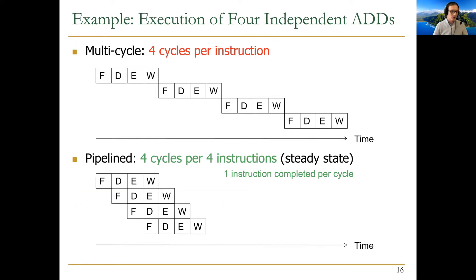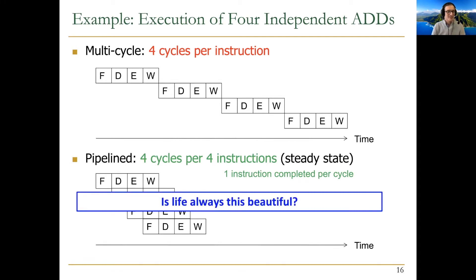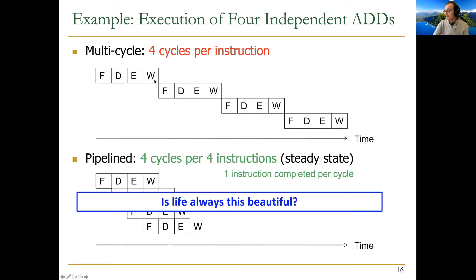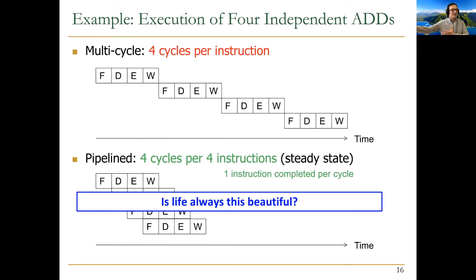The problem is life is not always this nice. You don't always have independent adds. When the second add depends on the result of the first, how do you keep the pipeline full? That's going to cause a lot of issues. This is the key difference from car assembly — in a car factory there's no dependence between cars, but different instructions may depend on each other because the program as a whole is trying to accomplish something, unlike cars which are independent.